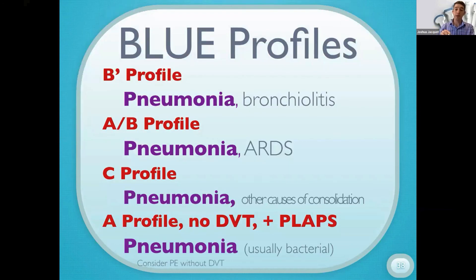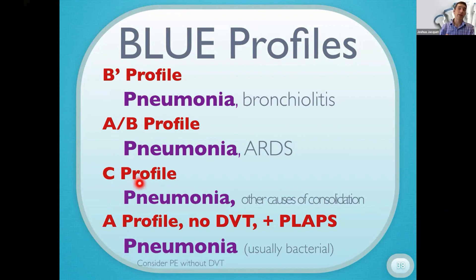The B prime profile — B lines without lung sliding — think of the pleura getting stuck together by an infectious process: typically pneumonia, can also be bronchiolitis. The AB profile — A lines on one side, B lines in another area — is typically pneumonia, a focal interstitial syndrome. The C profile — signs of consolidation (shred sign and tissue-like sign) — is typically pneumonia, though consider other causes of consolidation or masses. An A profile with PLAPS (consolidation or pleural effusion posteriorly) is usually bacterial pneumonia.